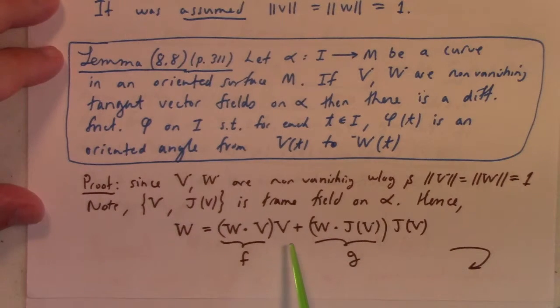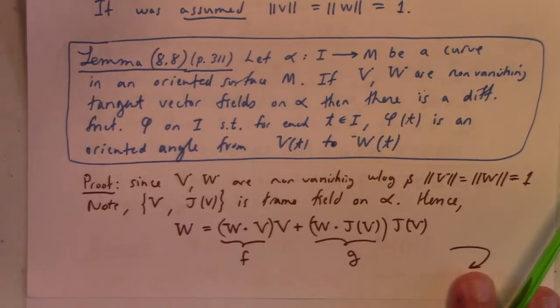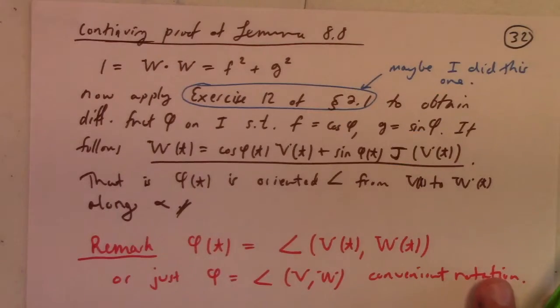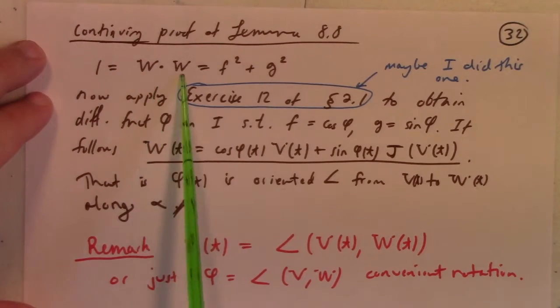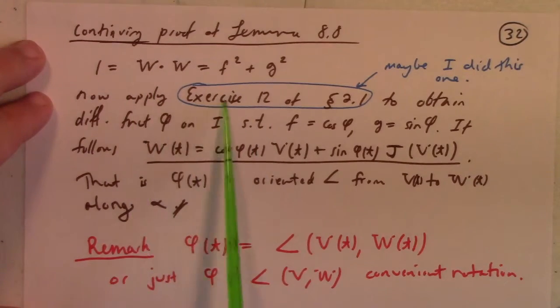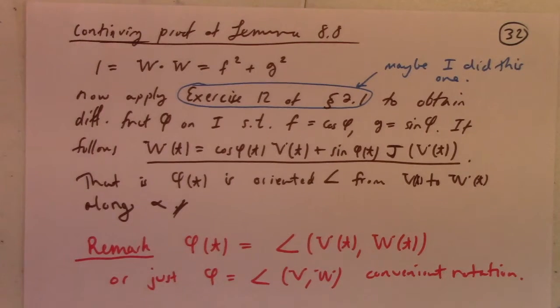And then, once you have this identity, if v and w have non-zero length, then you can put those factors back in and get it, I suppose. So, continuing the proof, I say here. So 1 is w dot w, which was f squared plus g squared. And then we can apply exercise 12 of section 2.1 to obtain a differentiable function φ, such that f is equal to cosine φ and g is equal to sine φ. It then follows w of t is equal to cosine φ of t, v of t plus sine of t, j of v of t. That is that φ of t is the oriented angle from v of t to w of t along alpha.